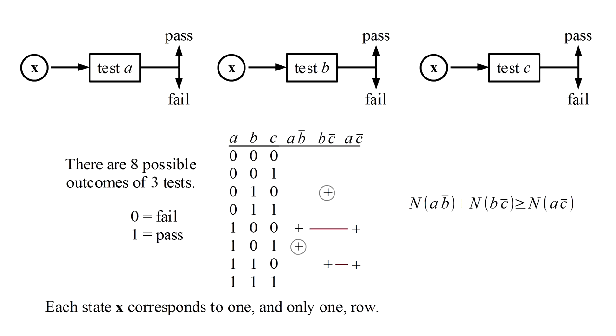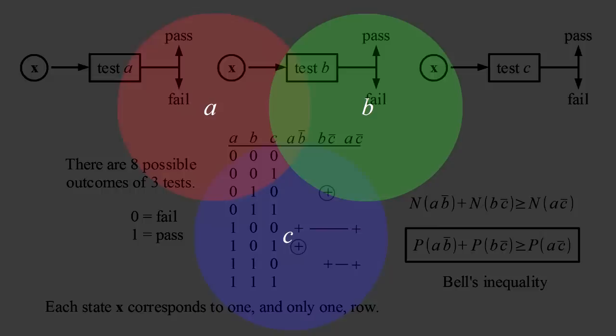Now the number of times an event occurs in a large number of experiments is simply a measure of that event's probability. So we have that the probability of A and not B, plus the probability of B and not C, is greater than or equal to the probability of A and not C. This is Bell's inequality.